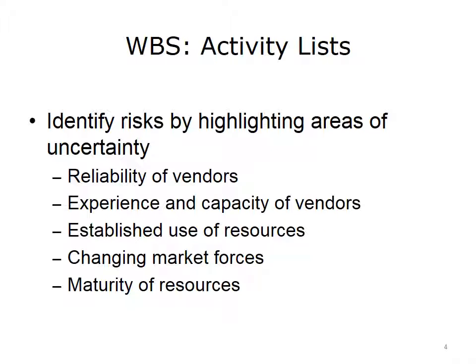You will be able to identify many project risks simply by examining these work packages and activity lists to uncover areas of uncertainty. As an example, an activity list may indicate that a specific software package will be integrated into the evolving system. What is the risk of using that software in the intended way? Is this a mature product? Is there a large installed base of users? Is the product being used in ways similar to how it will be used on your project? Have you heard that the vendor will be acquired by a larger company, and if so, how will that affect your project? If the new company continues to offer this product, will they offer it in the form that you want to use? These are just a few of the kinds of questions you can raise while reviewing activity lists.